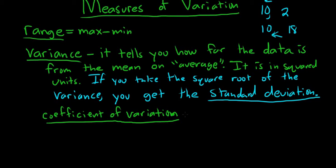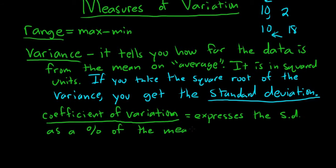The coefficient of variation expresses the standard deviation (SD) as a percentage of the mean. So it gives you a percentage.